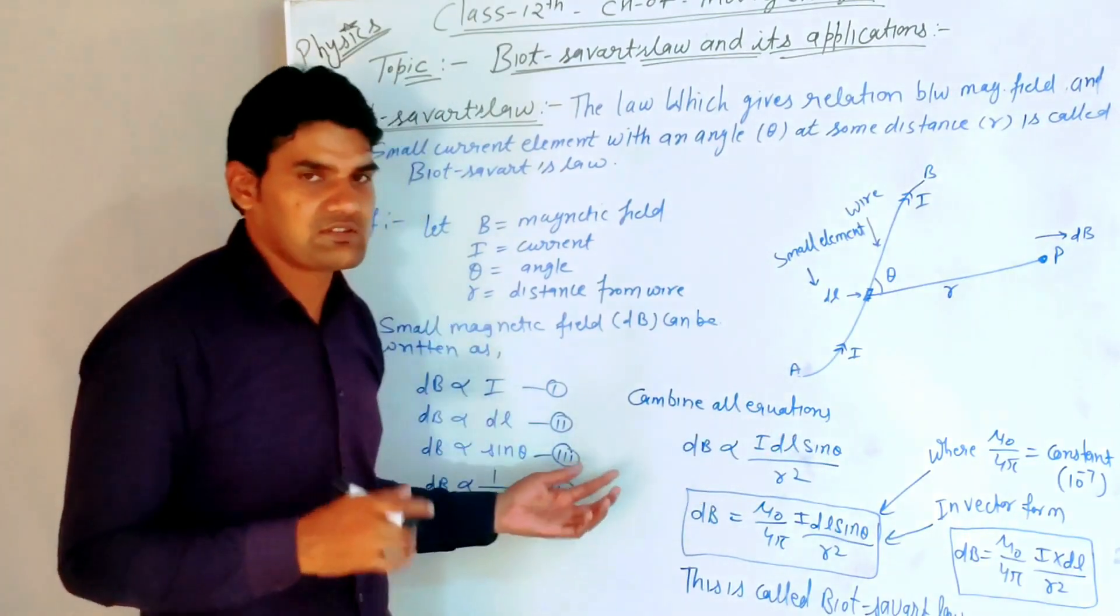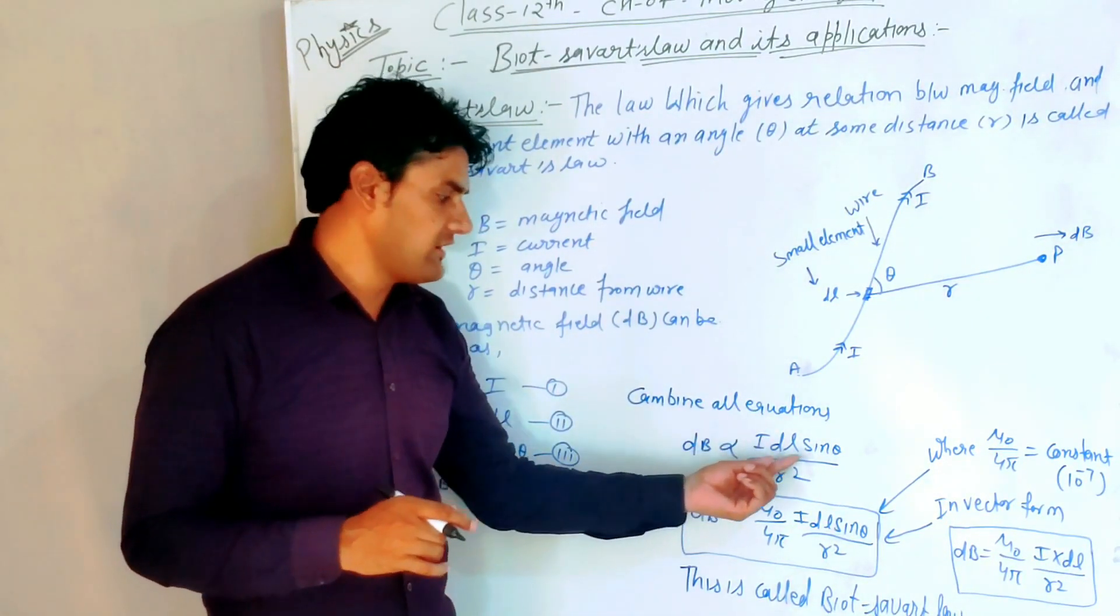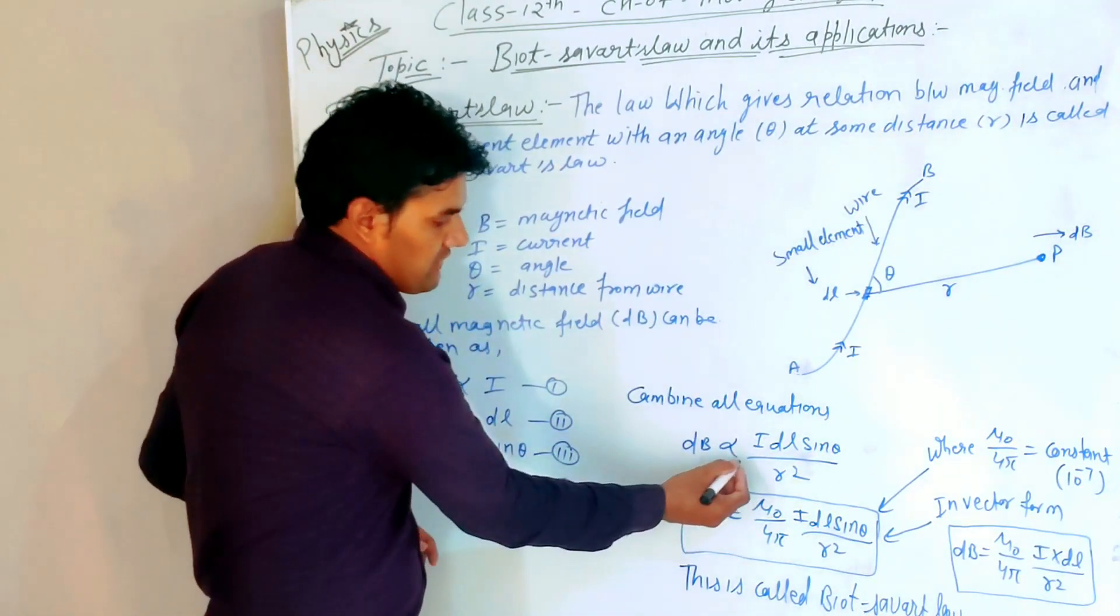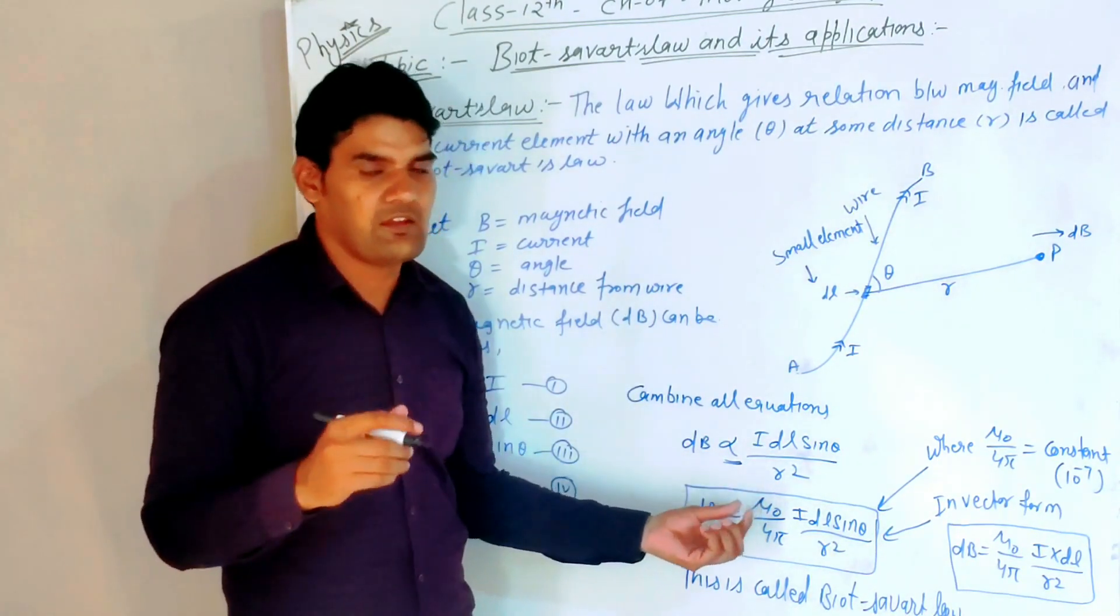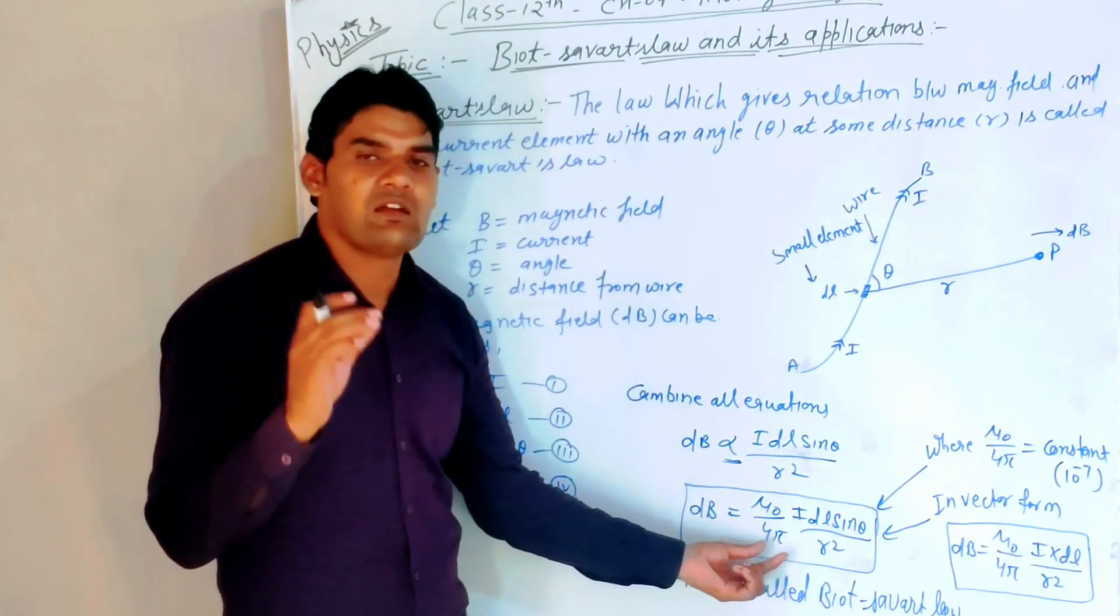Combine all equations. When we combine all equations, we get dB directly proportional to I dL sin theta upon R squared. To remove the proportionality sign, we introduce a constant k. This constant is mu naught upon 4 pi.